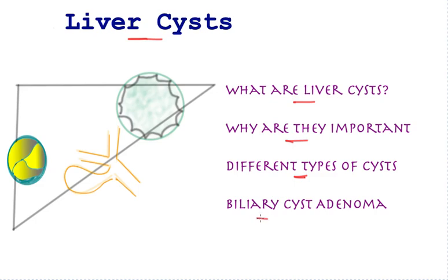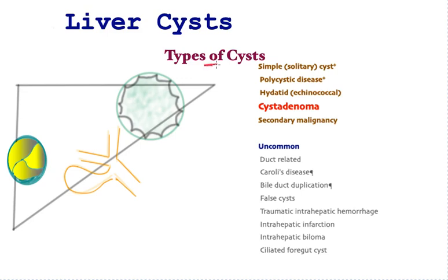In this talk I shall focus on the biliary cyst adenoma, because this particular type has malignant potential. The commonest are the simple cysts, or solitary cysts. As the name implies, they are thin-walled cysts within the liver. They occur widely within the population and are routinely picked up on scans, and the great majority do not require any treatment at all. It is only when they get beyond a certain size and start causing symptoms that treatment may be contemplated. I have done a full video on this which is linked.